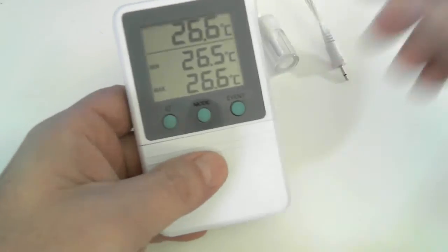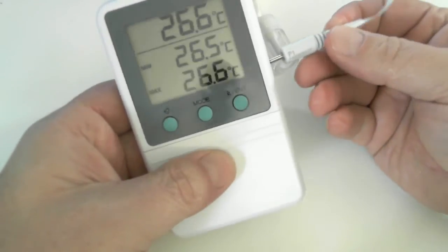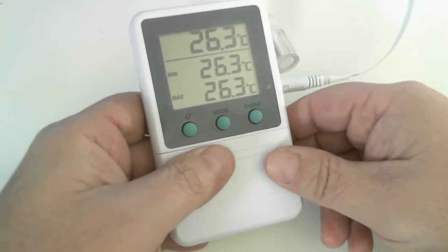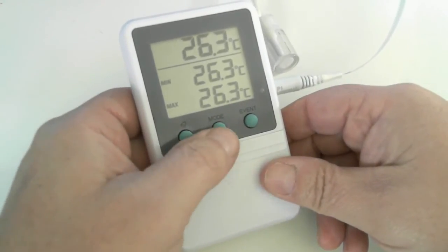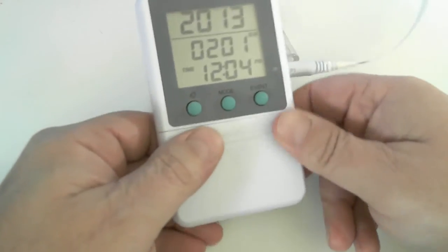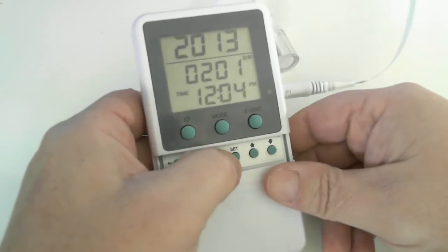All right, so let's plug in our external bottle probe. And the first setting I like to do is our time and date settings. So let's go to that screen. Open up our compartment. Hit the set button.